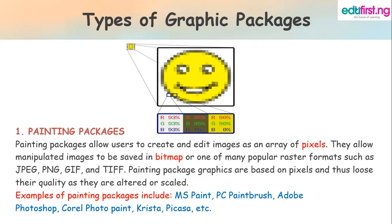A pixel, also called picture element or point of color, is a physical point in an image. It is the smallest controllable element of a picture represented on the screen. On the other hand, a bitmap in a digital image is composed of a matrix of dots. A bitmap graphic is created from rows of different color pixels that together form an image.